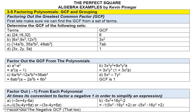In the second half of this module on polynomials, we're going to talk about factoring. Before we get too deep into factoring, let's remind you how to factor out the greatest common factor of a number. Looking at three terms, we want to identify the greatest common factor. Considering all the factors of 24, 16, and 32, the largest factor that divides into all three is 8.